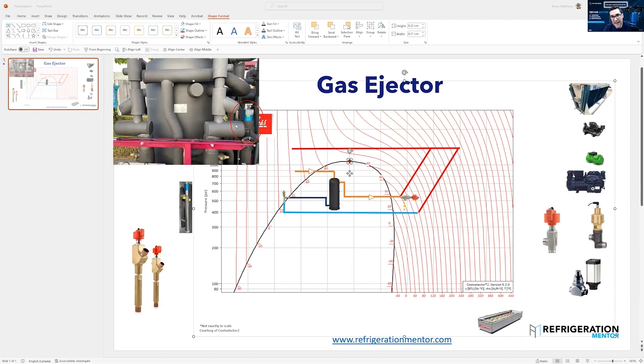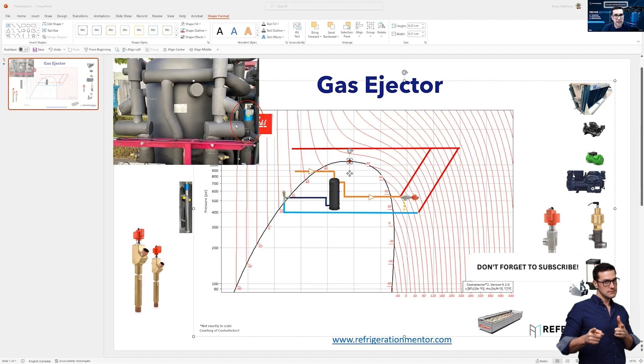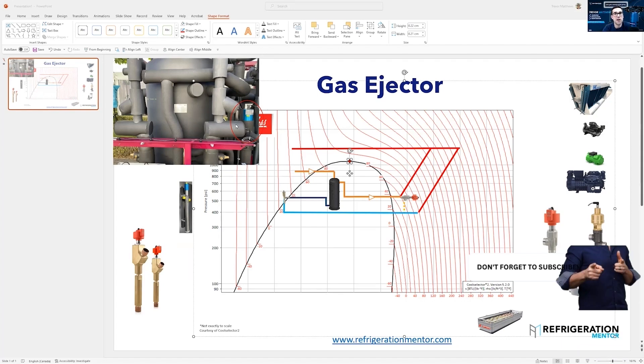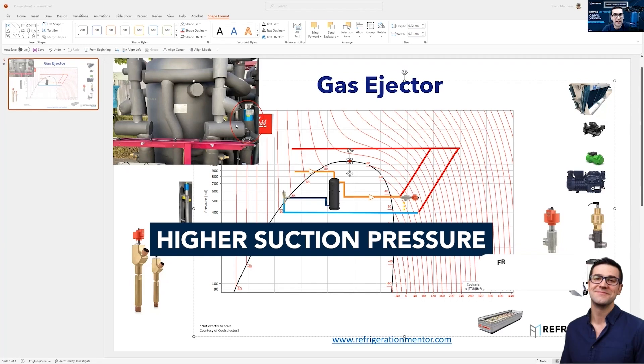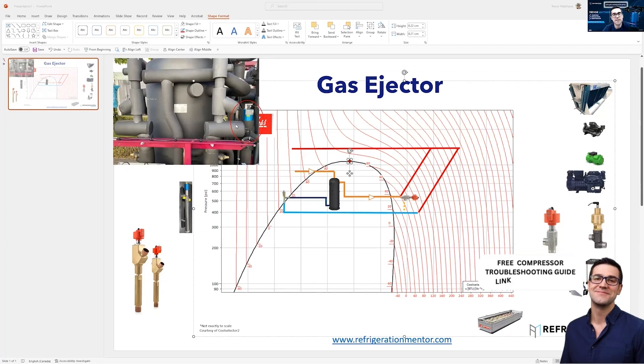The whole purpose of the gas ejector, in the simplest terms, is so the medium temp transcritical compressors don't have to do the work or as much work. It's taking the load from the medium temp transcritical compressors and putting it on parallel compression. The difference is parallel compression runs at a higher suction pressure, more like the flash tank pressure, versus the medium temp suction.